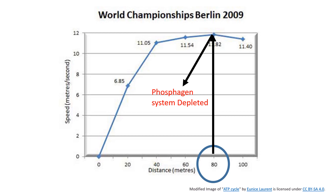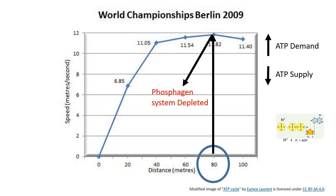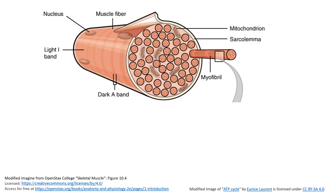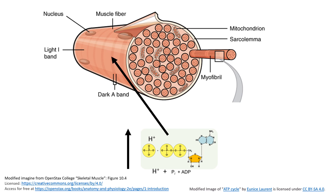Despite the fact that the phosphagen system is depleted at this point, the ATP demand within the muscle fibers stays exactly the same — incredibly high. If the phosphagen system is depleted, the system that can resynthesize ATP at the fastest rate is gone. This means the supply of ATP to the muscle fibers is diminished. If the demand is higher than the supply, the muscle fiber will continue to break down more ATP than it is making, and ADP, inorganic phosphate, and hydrogen ions will begin to accumulate within the muscle fibers.